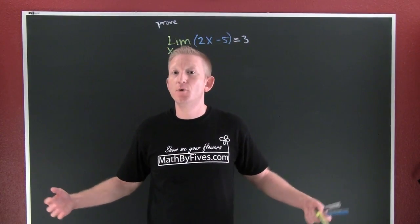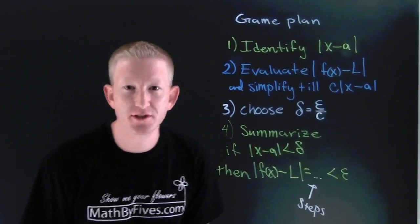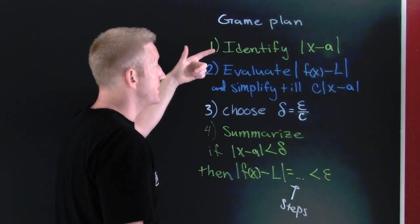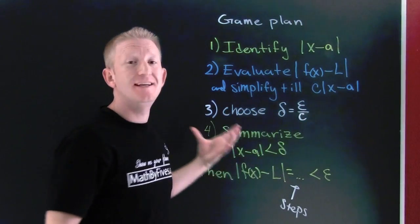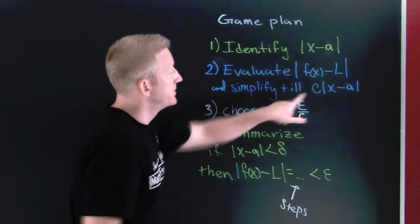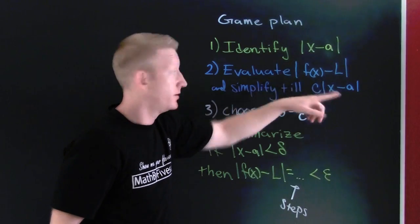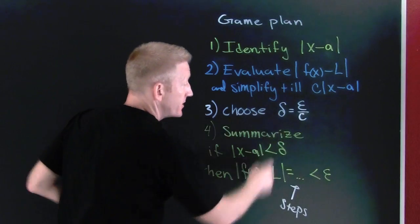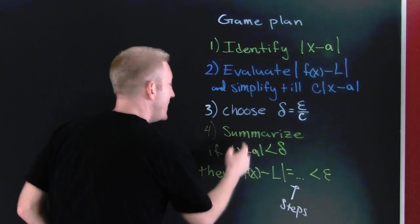So we need a game plan and here's what we're first going to do. We're first going to identify our x minus a, and then we're going to evaluate the function minus the limit until we get some constant times whatever we have in part one. Why? So that we can choose our delta to be epsilon over c, excellent.